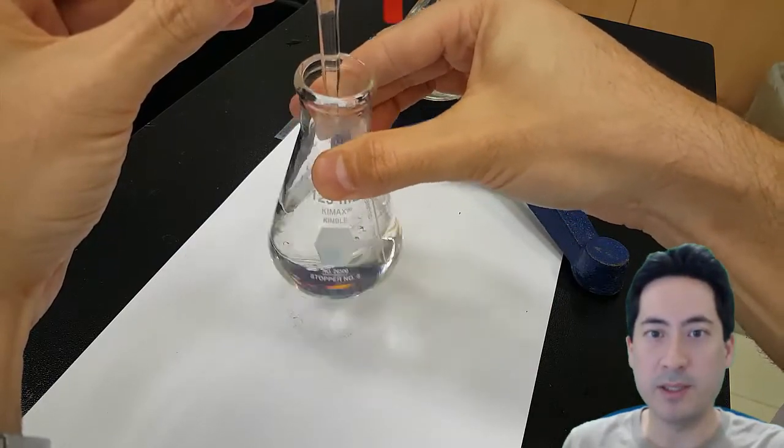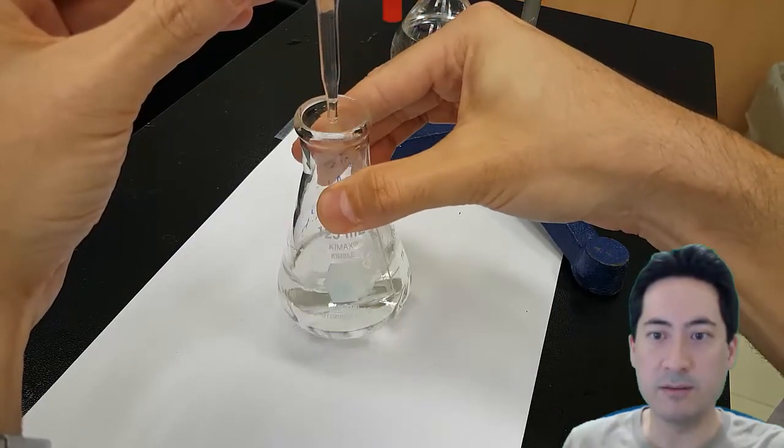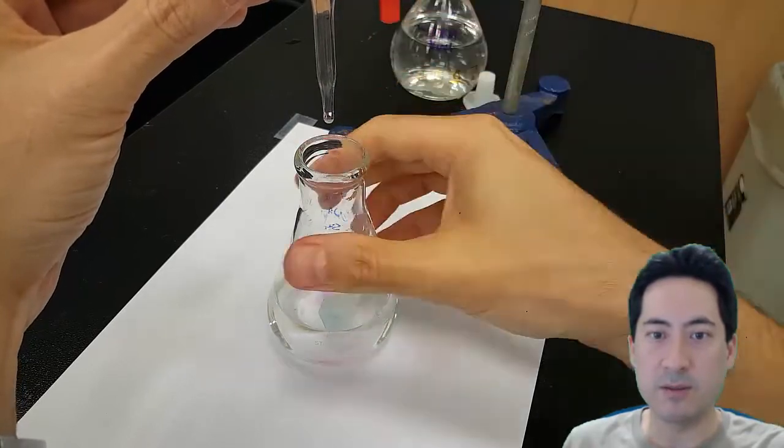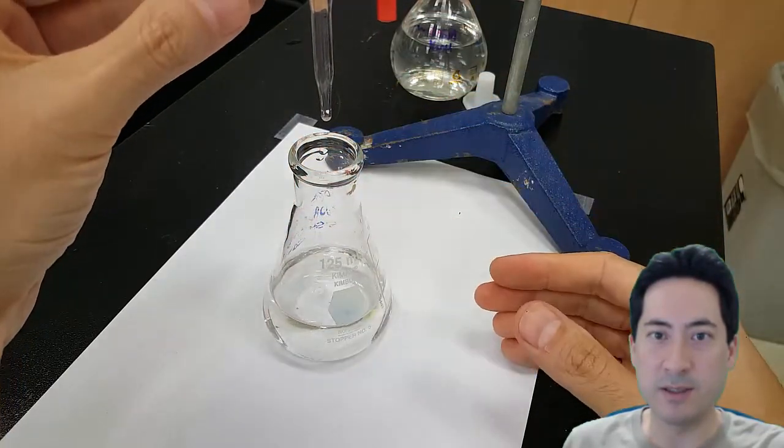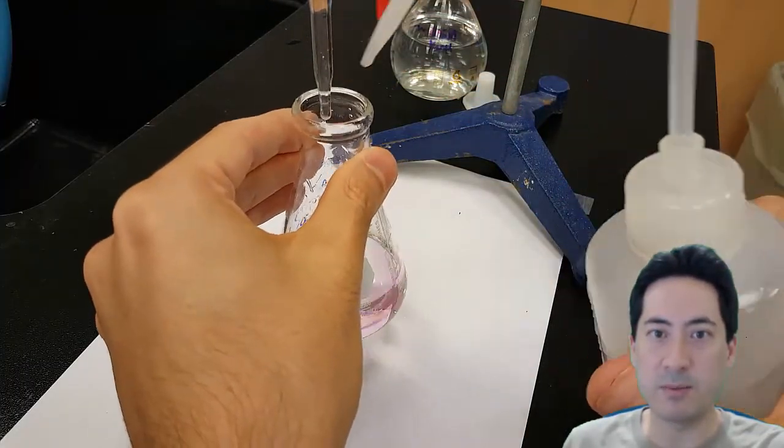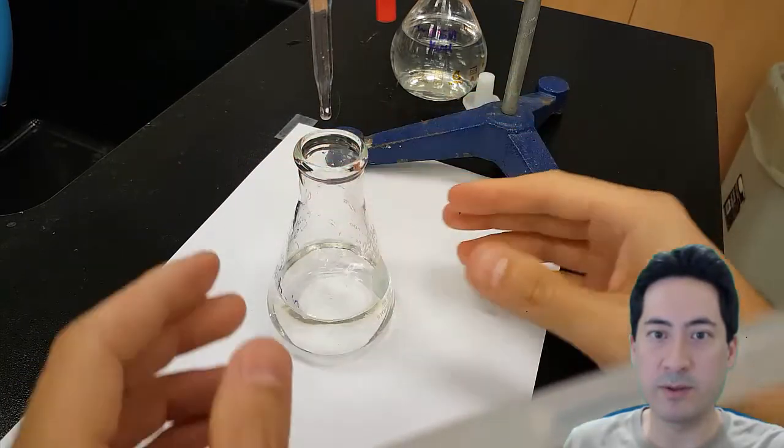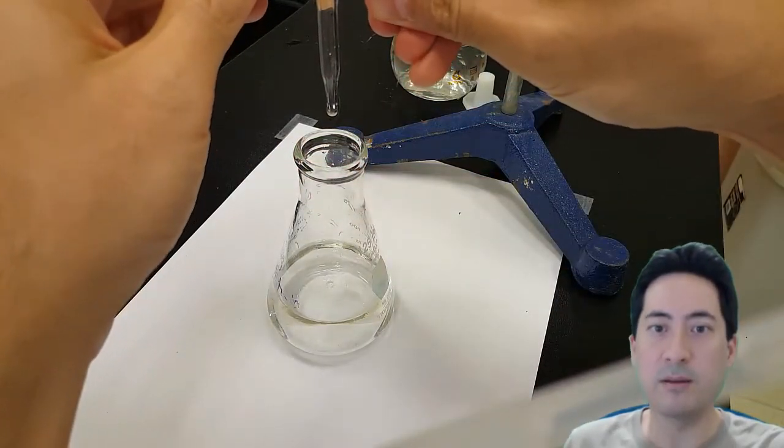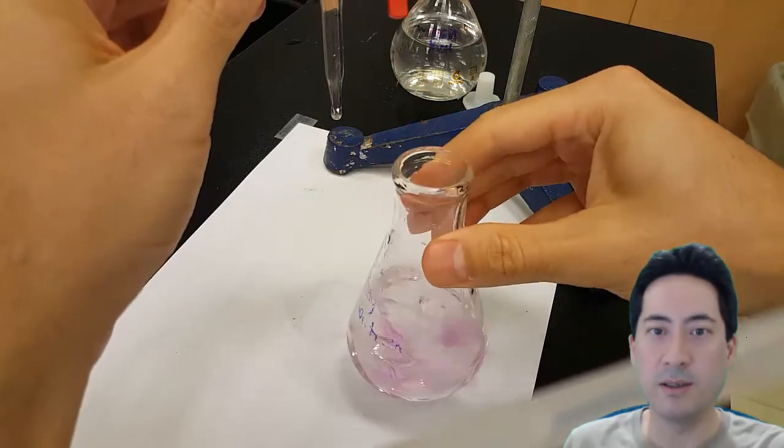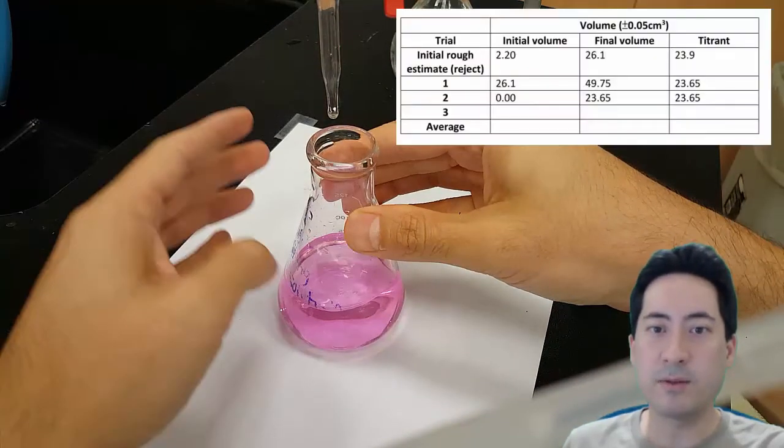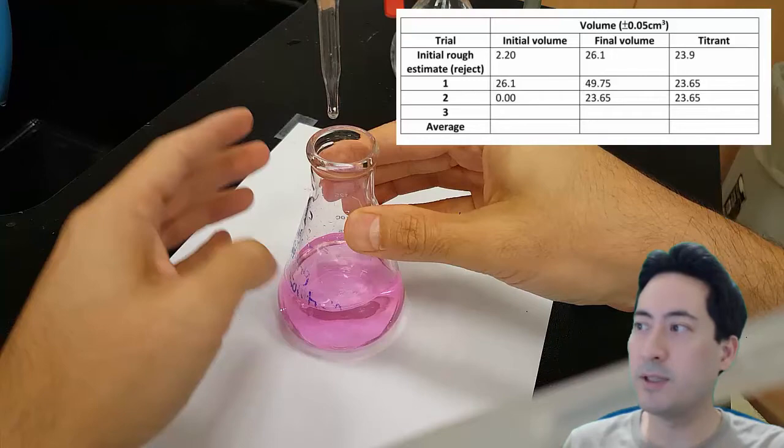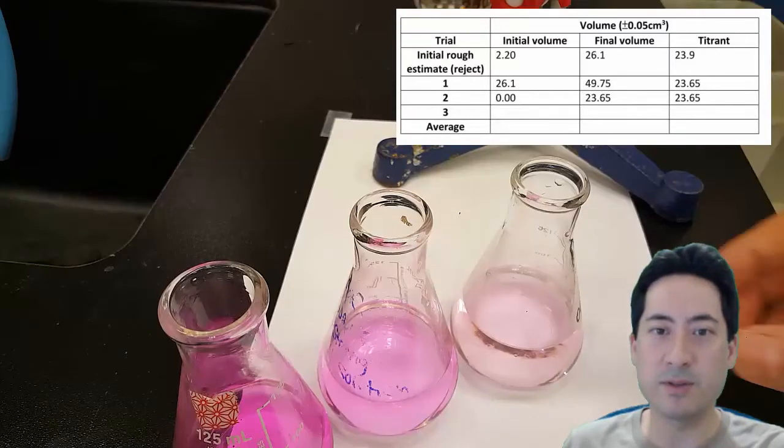Now each time I'm adding a drop, the pink is really staying longer now. And you can see that I'm mixing it quite a lot and the pink just hangs around. So I must do it drop by drop now. Stop at each drop, give it a mix. And there you go. It goes from completely clear to completely pink. So I write that down. That was 49.75 and so the reading is 23.65.